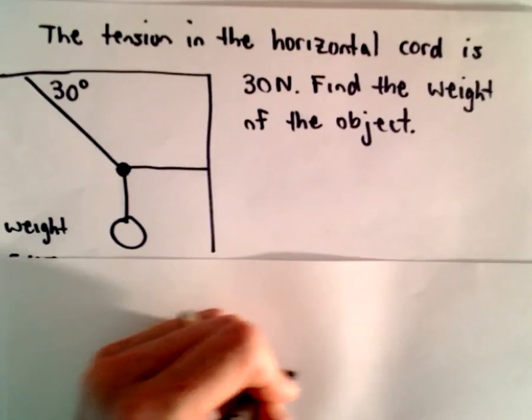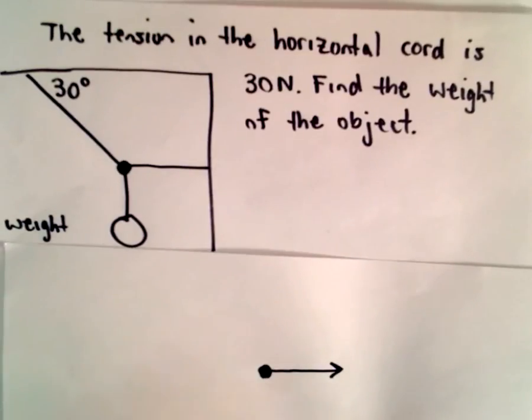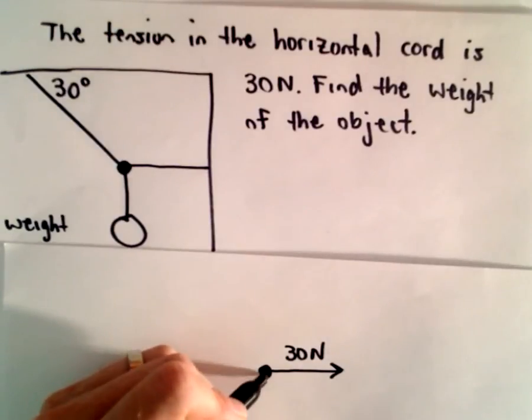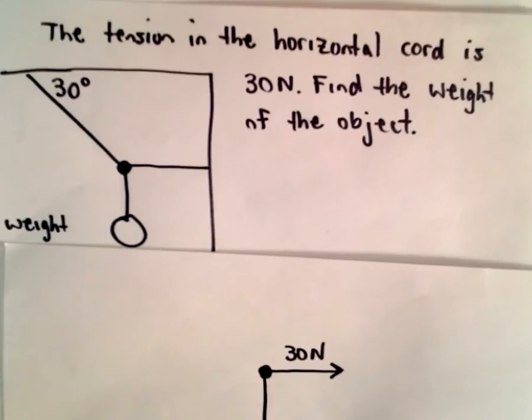Okay, so I know that there's a horizontal vector, a horizontal force here of 30 newtons that's given to us.